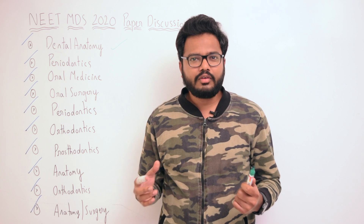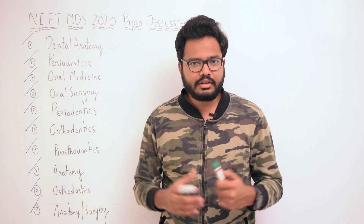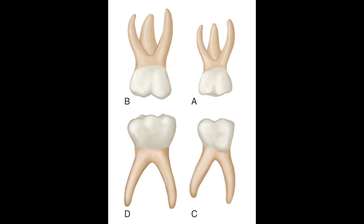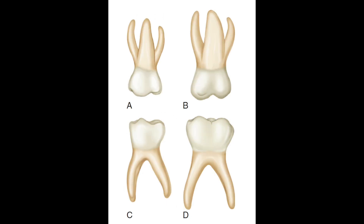The crown is constricting more comparatively at the cervical portion. This is an image of primary right molars, buccal aspect, where you can see: A - maxillary first molar, B - maxillary second molar, C - mandibular first molar, and D - mandibular second molar. Now you can see the lingual aspect of primary right molars.